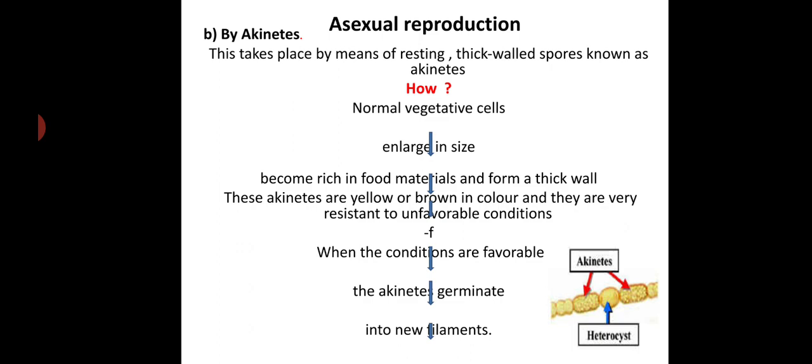This has been shown in the diagram in the lower part of the slide: the akinetes, which are differentiated from the vegetative cells. In between the akinetes, you can see there will be heterocysts.